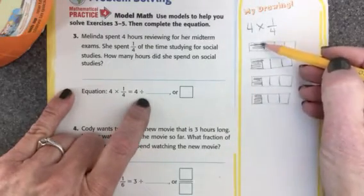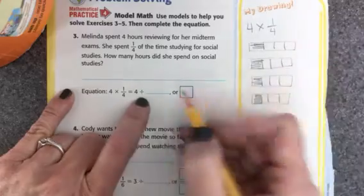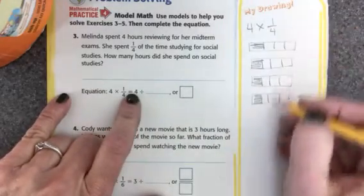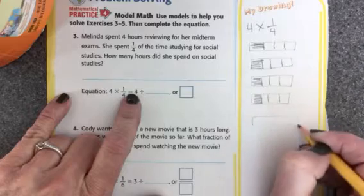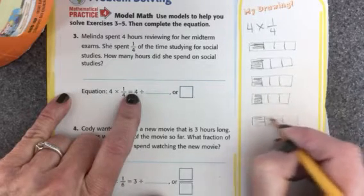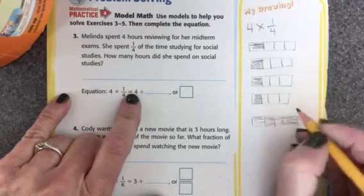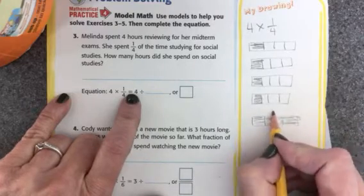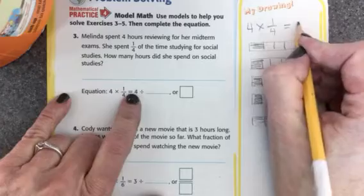Okay, so I have four pieces all together. And four pieces all together is going to be a whole. Okay, so 4 times one-fourth equals 1.